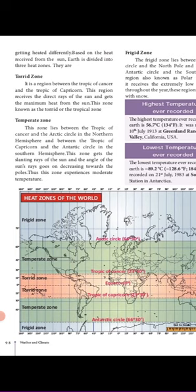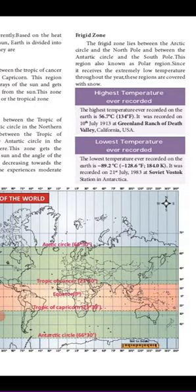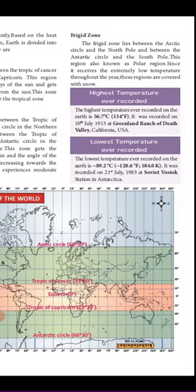The next zone is the temperate zone. In the northern hemisphere, this zone lies between the Tropic of Cancer and the Arctic Circle. In the southern hemisphere, it lies between the Tropic of Capricorn and the Antarctic Circle. This region does not receive direct sun rays — it receives slanting rays of the sun — so it is neither very hot nor very cold.